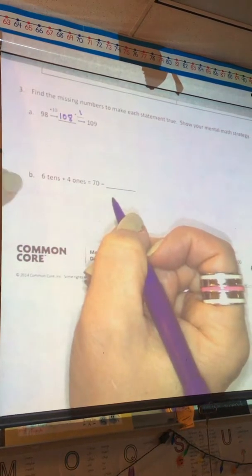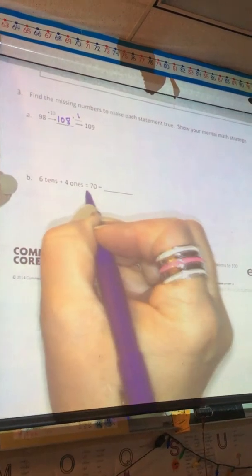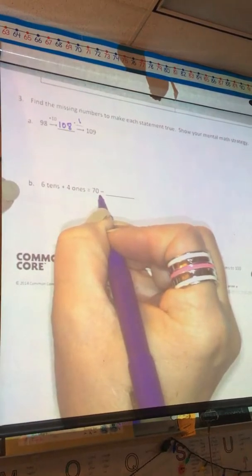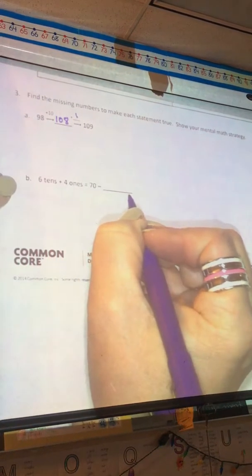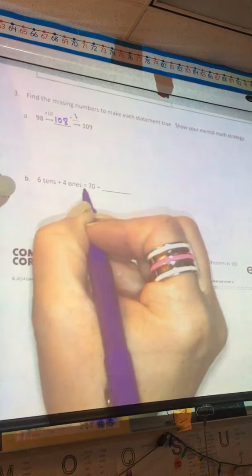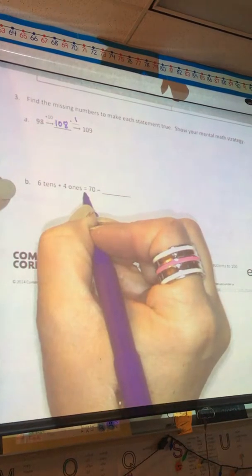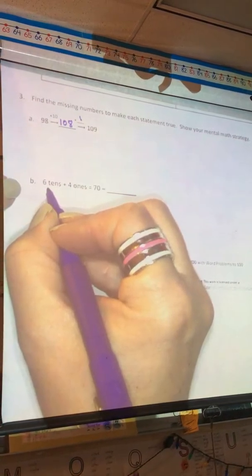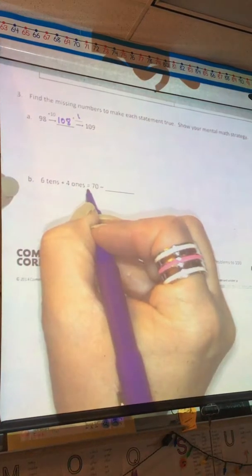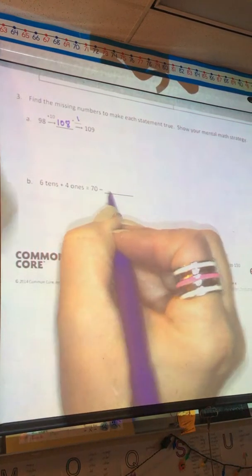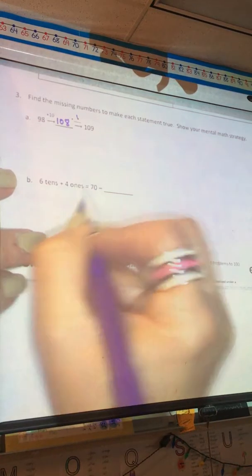Letter B, six tens plus four ones equals 70 minus what? I know that the equal sign also means the same as, so I need to say to myself, six tens plus four ones is the same as 70 minus something. Well, six tens, four ones is 64.